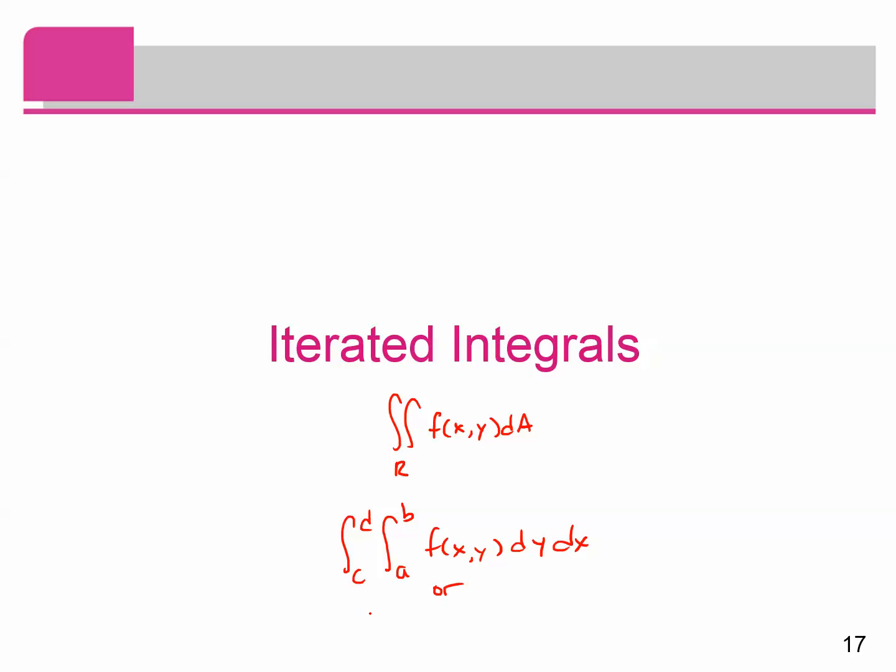Or, sorry that should be DX, DY, or the integral from A to B, the integral from C to D of F of X, Y, DY, DX. So these are going to turn out to be two ways of writing the same thing, only now it tells us how we actually would calculate this integral by hand.